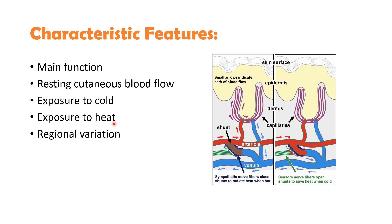Regional variation in cutaneous blood flow exists due to the presence of AV anastomoses in abundance in certain areas such as hands, feet, nose and ear lobules. During heat stress, blood flow to areas with rich AV anastomoses increases much more compared to the rest of the skin. The color of skin is basically determined by the pigment melanin, and the amount of blood and degree of oxygenation affect the skin color tinge, which may be reddish, bluish or some shade in between.